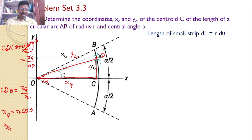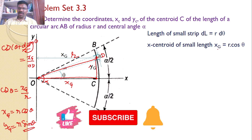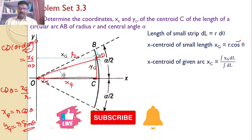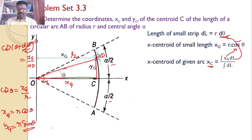Similarly, YG is equal to R·sin θ. The X centroid of the small strip DL has XG = R·cos θ. The X centroid for the total arc AB is given by XC = (∫ XG dL) / (∫ dL), where XG = R·cos θ and dL = R·dθ, with θ limits varying from −α/2 to +α/2.